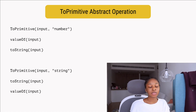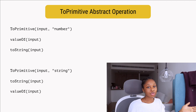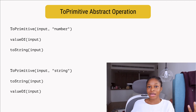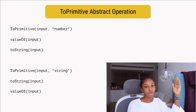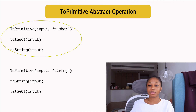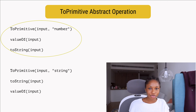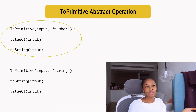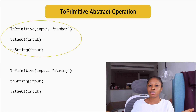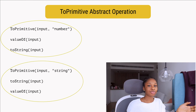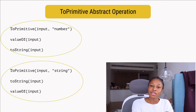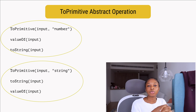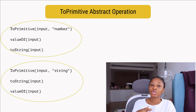When ToPrimitive is invoked with the default hint, it sets the default to number and goes through the number algorithm — except when working with dates, in which case it sets the default to string and goes through the string algorithm.